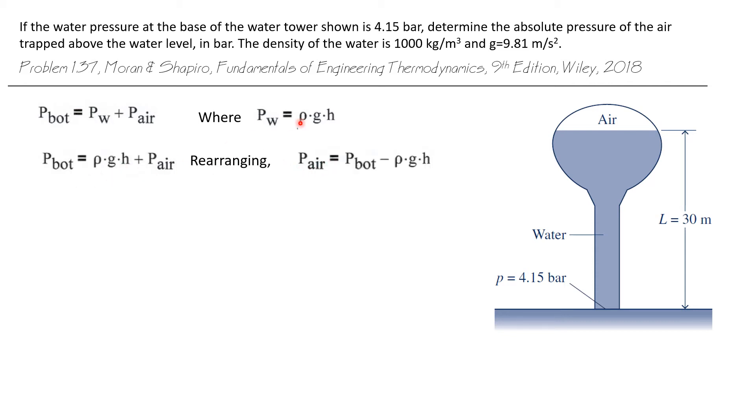In this case, we can substitute rho g h for the pressure of the water. So the pressure at the bottom is just rho g h for the water plus the pressure of the air. Now the pressure of the air is our unknown, so let's rearrange this equation and solve for the pressure of the air. That's the pressure at the bottom, which we know, minus rho g h.